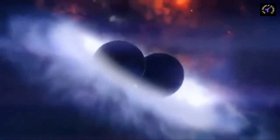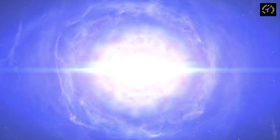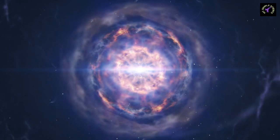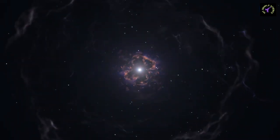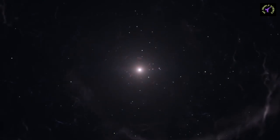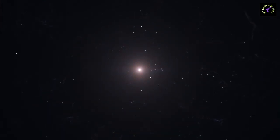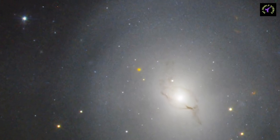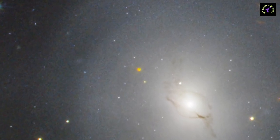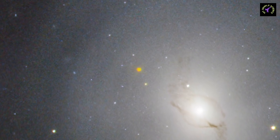The masses of the two black holes were 36 and 29 times the mass of the Sun respectively. The black hole created after their fusion had mass 62 times the mass of the Sun. The mass of the created black hole is less than the addition of masses of the two black holes before fusion.